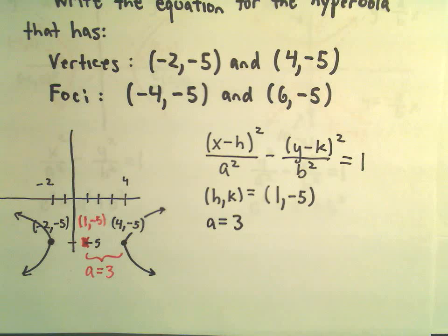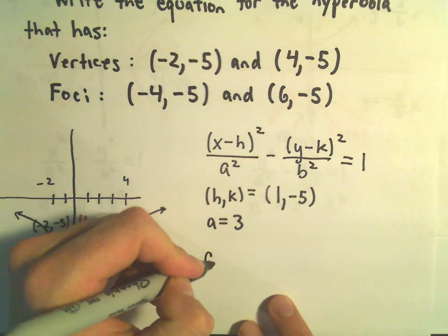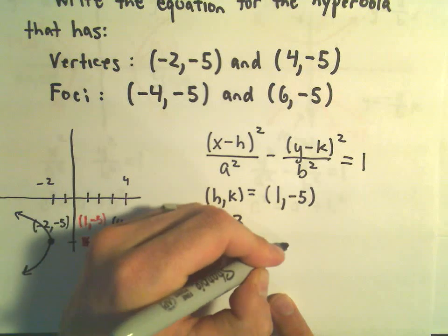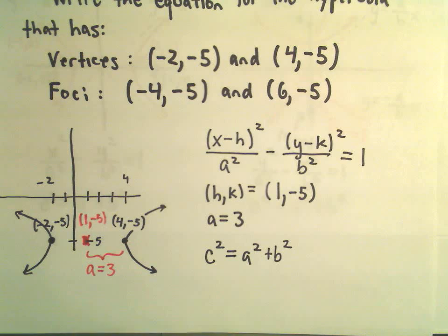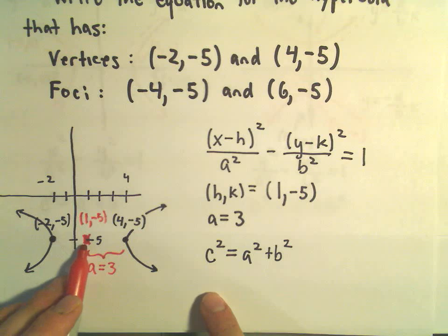The only thing, really, we have left to figure out is our b value. Remember this equation that c² equals a² plus b². And remember, c represents the distance to the foci, okay, from where the asymptotes cross or from the center of this hyperbola.